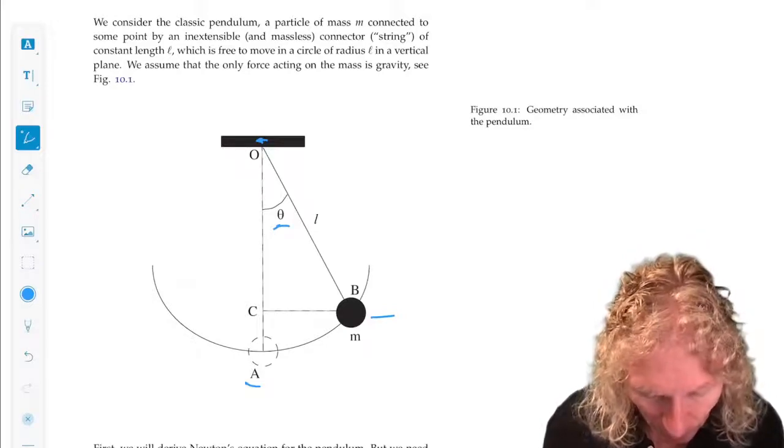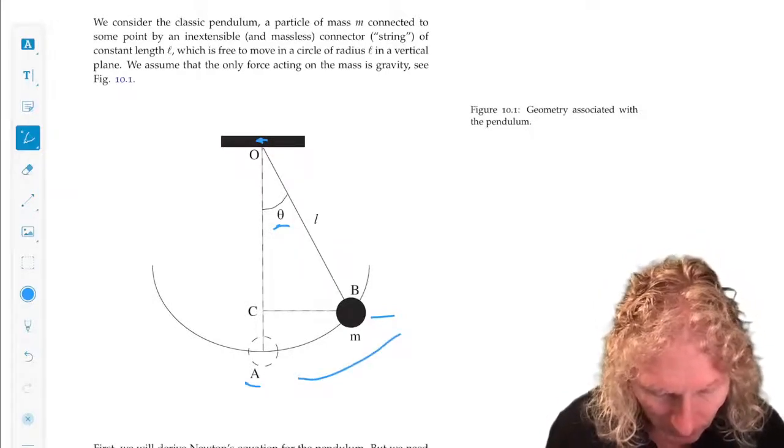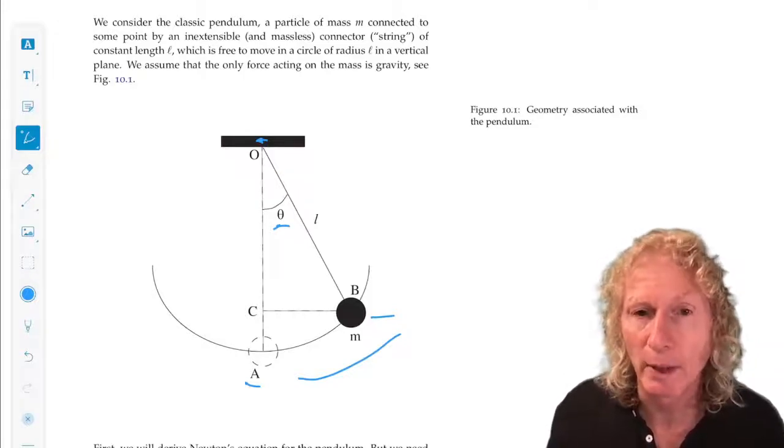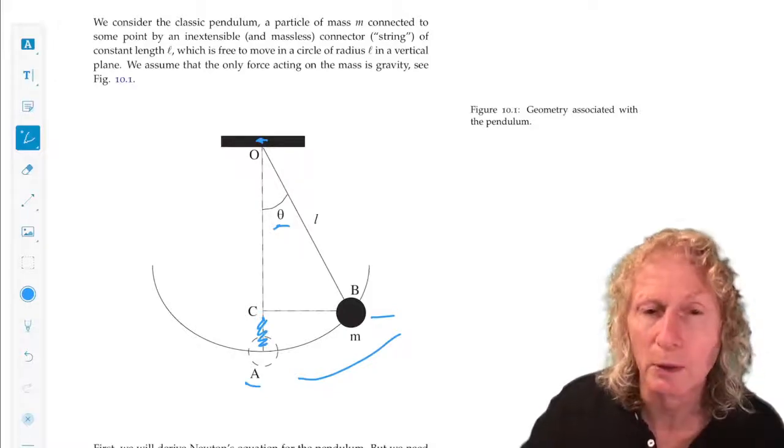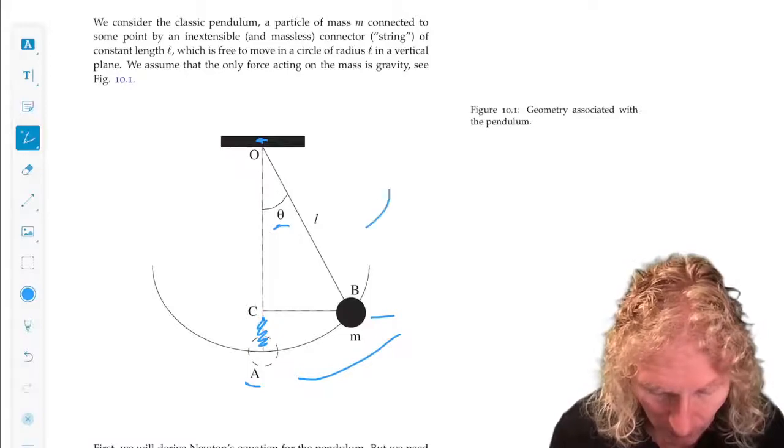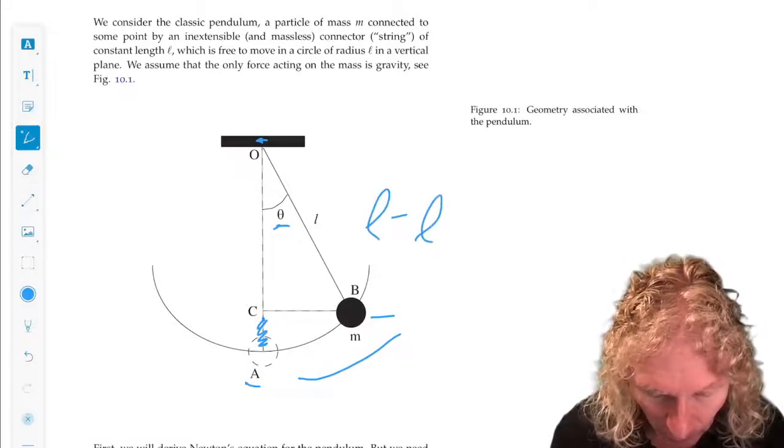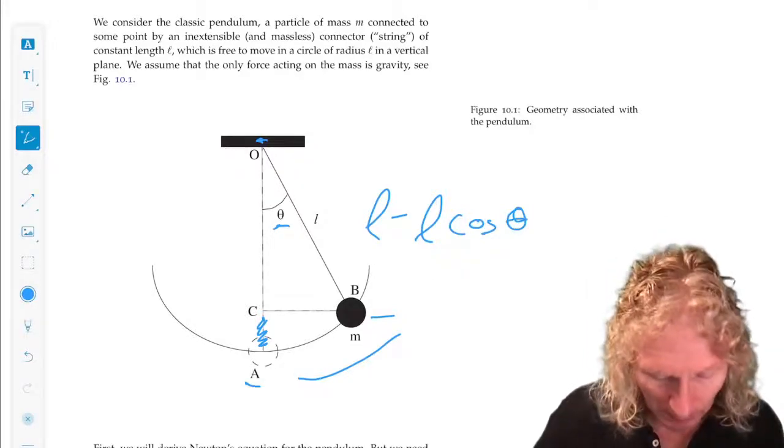So as we displace it to the side, what is the height above the reference position? That's going to be this distance here. And you can do a little trigonometry, and you can see that's L minus L cosine theta.